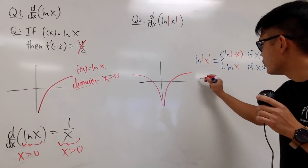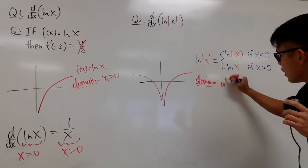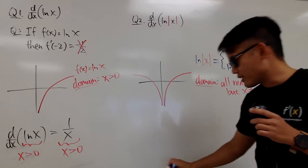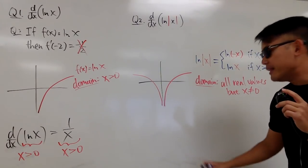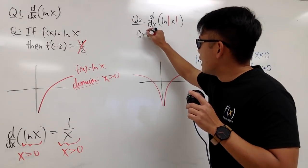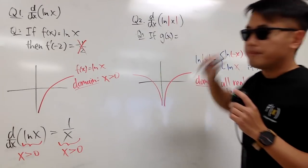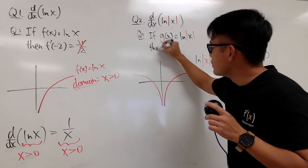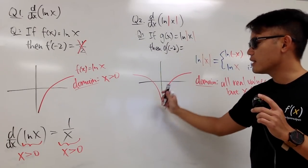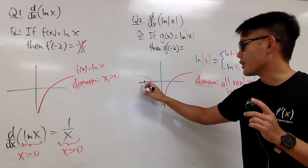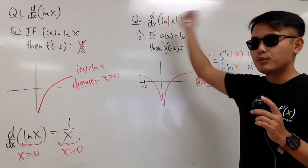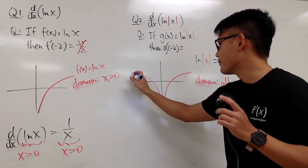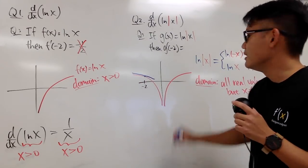The domain for this function is all real values except x cannot be 0. Now I'll ask you the same question. Let g of x be ln of absolute value of x. What is g prime of negative 2? If you look at the graph, when x is negative 2 it's somewhere on the left branch — negative 1 corresponds to ln of absolute value of negative 1, which is ln of 1, which is 0. At x equals negative 2, you can draw the tangent line and the slope of that tangent line is precisely negative 1 half.